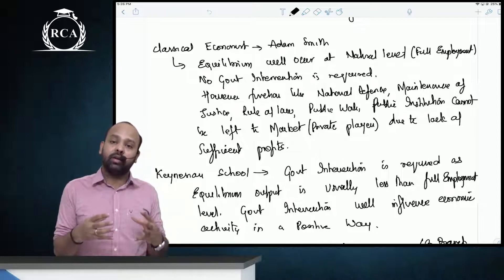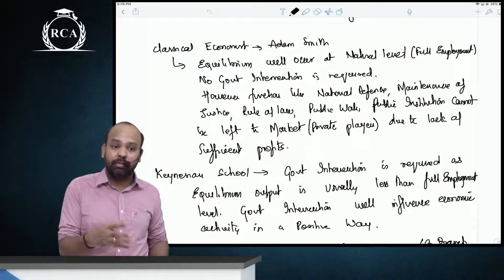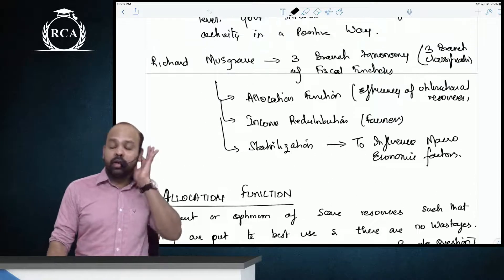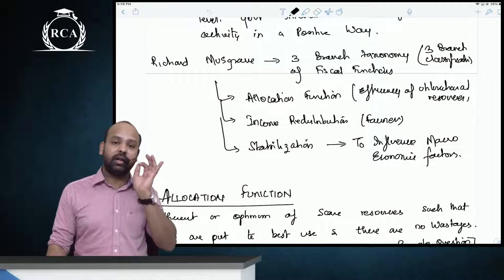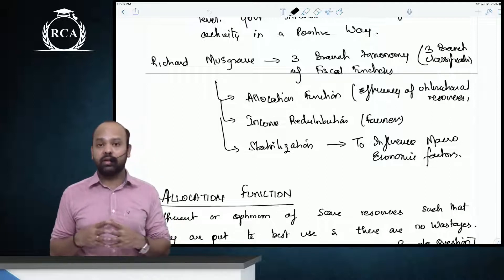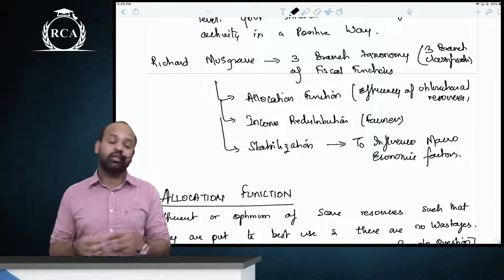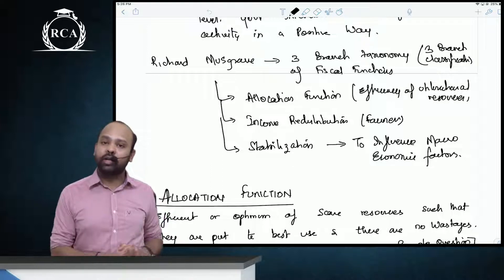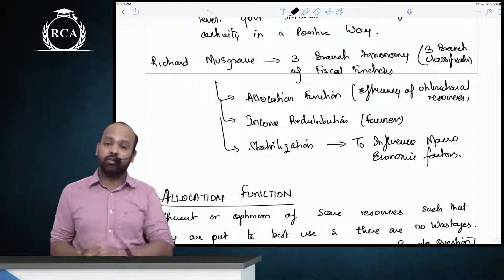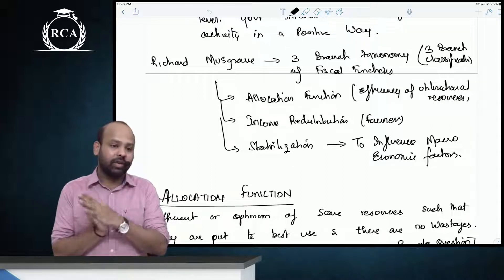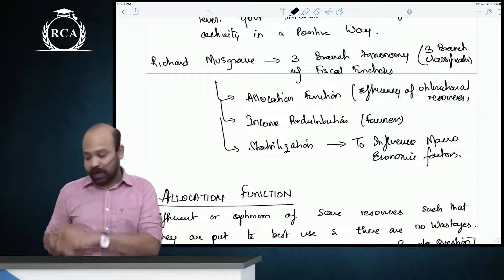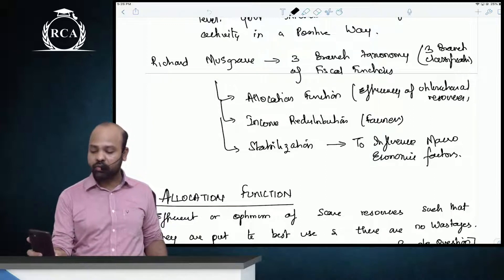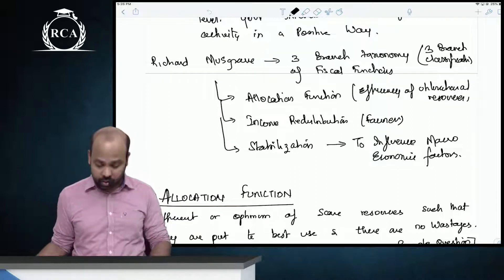Richard Musgrave classifies the fiscal functions of a government into three branches: the allocation function, the redistribution function, and the stabilization function.